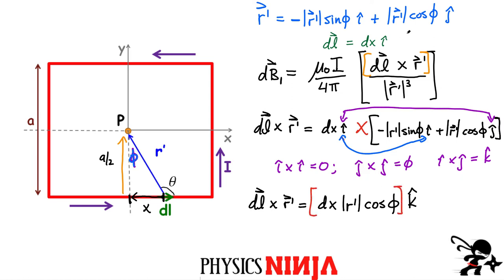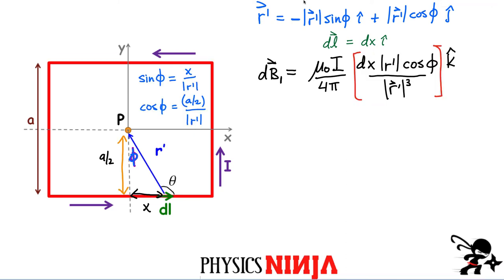We substitute this into the Biot-Savart numerator. We have the magnitude of R prime appearing once in the numerator and twice in the denominator — it simplifies to one over R prime squared. Now we have three terms that all depend on each other: DX, the angle phi, and R prime. From the trigonometric expressions, these are all related, so we need to use trigonometric substitution to write everything in terms of a single variable.